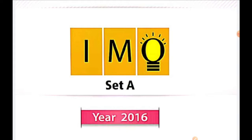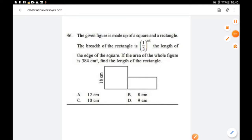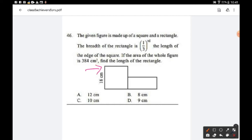Question number 46: The given figure is made up of a square and a rectangle. The breadth of the rectangle is one third of the length of the edge of the square. If the area of the whole figure is 384, find the length of the rectangle. The whole area of the figure is 384, so first we will find out the area of the square.